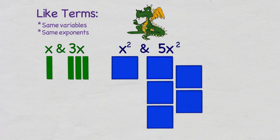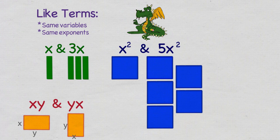I could even have something like xy and yx because multiplication is commutative. So, it doesn't matter what order you multiply the numbers in.